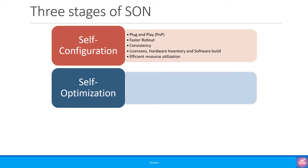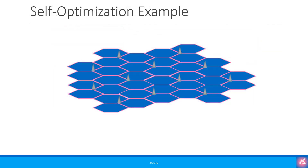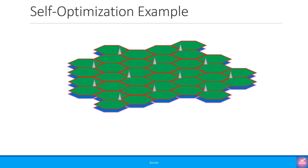The next stage is self-optimization, which includes many different features we will look at in future videos. For example, if an area is covered in a particular frequency and the operator wins some new spectrum and decides to create a new coverage layer — such as millimeter wave spectrum in 5G to provide high throughputs in some areas — all the layers would have to be optimized for load, handovers, etc. Spectrum is a very expensive resource, so it needs to be utilized very efficiently. This is where self-optimization comes into the picture.